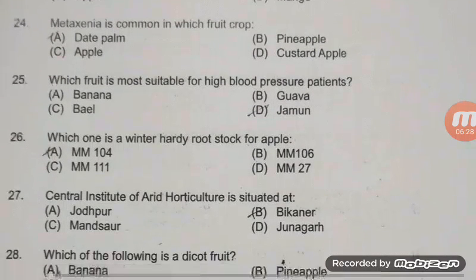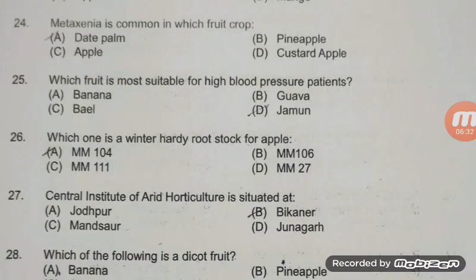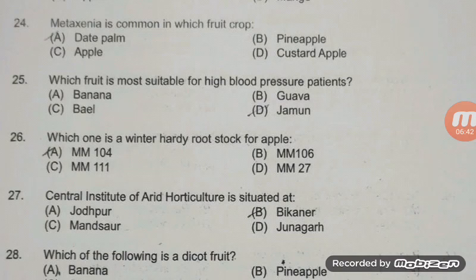Which one is a winter-hardy rootstock? MM104 is winter hardy. MM111 is a drought-resistant rootstock of apple. The Central Institute of Arid Horticulture is situated at — the right answer is B.